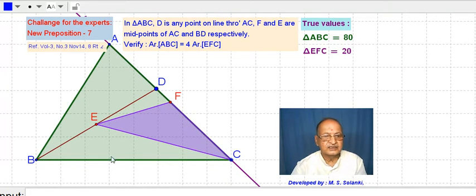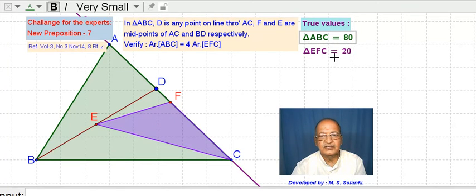Now this is 1, 2, 3, 4, 5, and 5 means 10. Also 1, 2, 3, 4, 5, 6, 7, 8, it means 16. 16 into 10 divided by 2, that is 80.